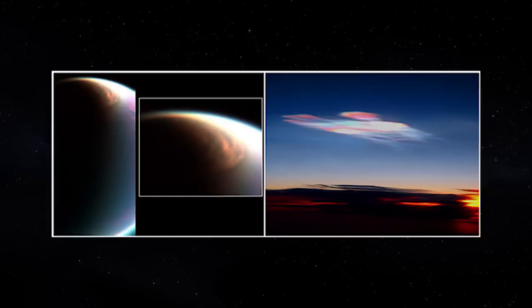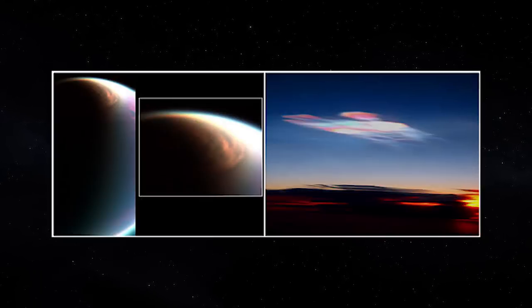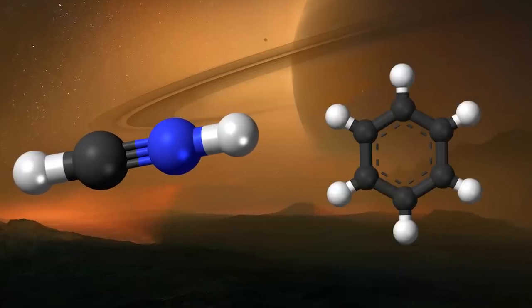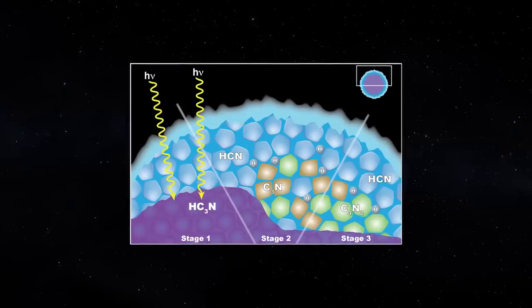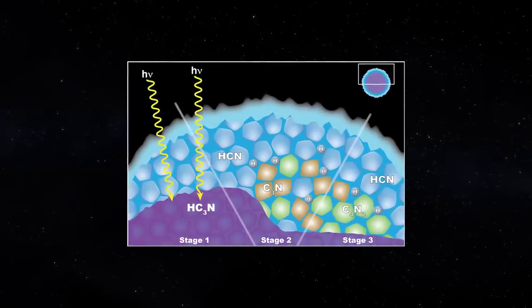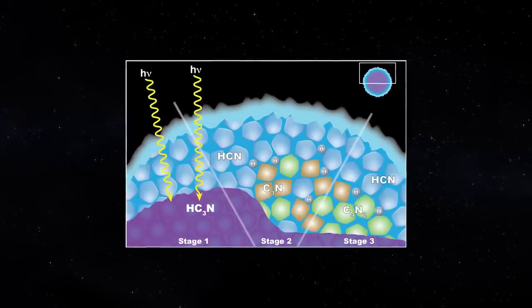Experiments determined that the exotic ice cloud is a combination of hydrogen cyanide and the large ring-shaped chemical benzene. The two chemicals appear to have condensed at the same time to form ice particles, rather than one being layered on top of the other.